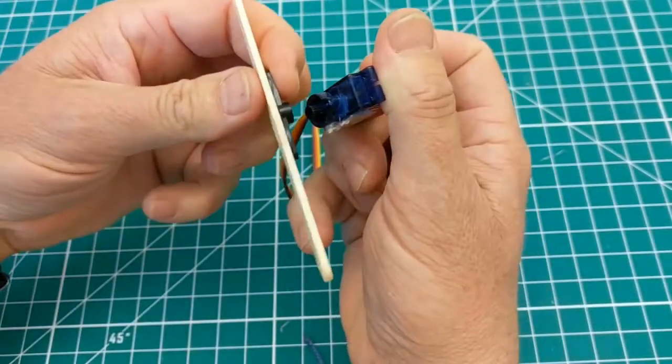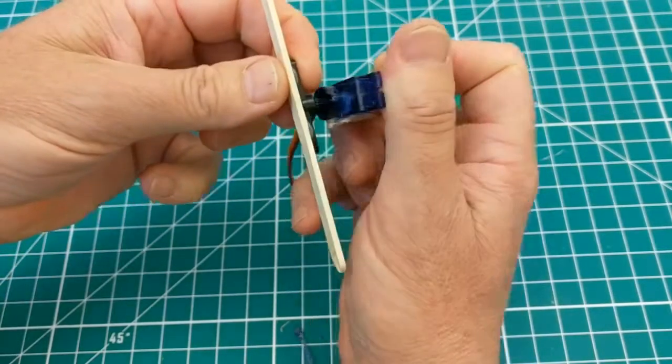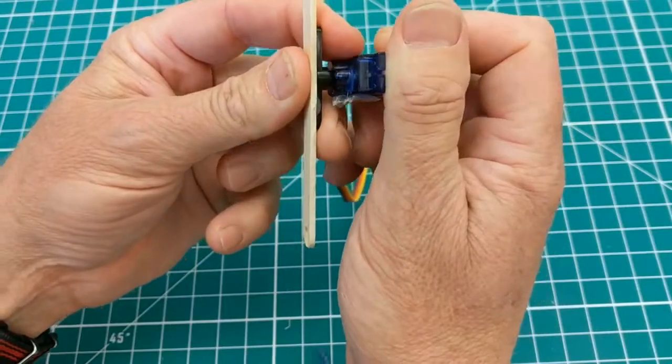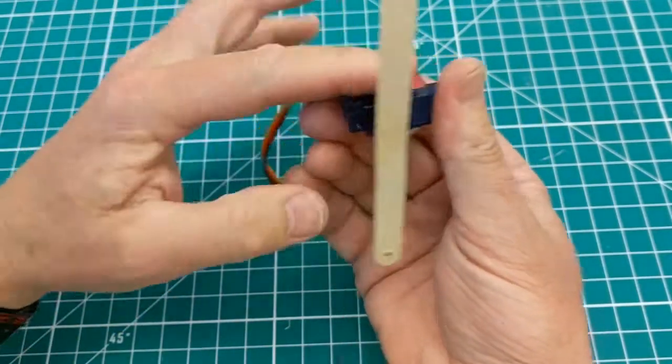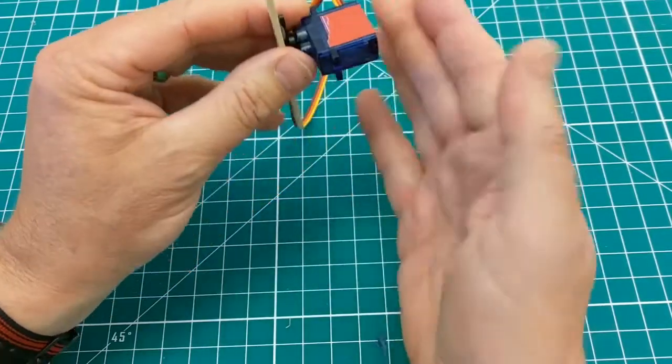I'm going to pop off the horn that's glued to the stick, and then I'm going to insert it back on about perpendicular to the long side of the servo body like that.